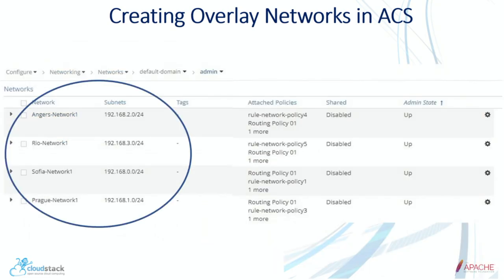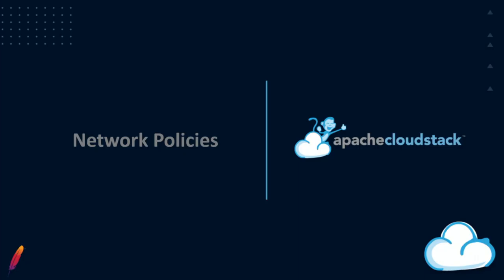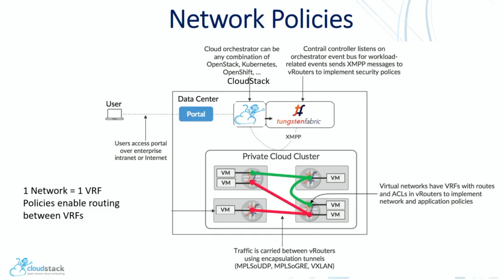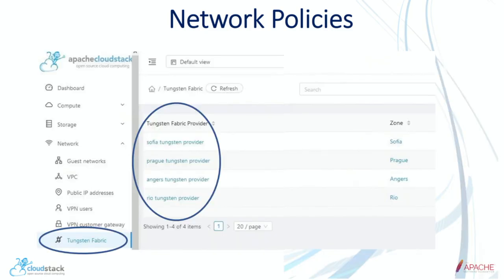Here are my networks in CloudStack and how they look in OpenSDN. I created network policies. What are those? Network policies define that you want traffic going from a certain network to a certain network — which traffic, or even which VM to which VM. In OpenSDN, each network has its own VRF — its own virtual routing and forwarding — completely isolated. It uses XMPP to create the routes, and you can create whatever policies you want between networks. Here is my Tungsten Fabric provider, which is my manager. You can have a manager for each zone or have a global manager, whatever way you want to set up.